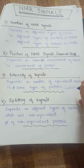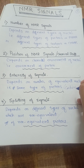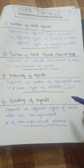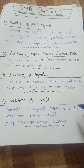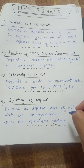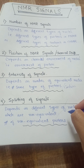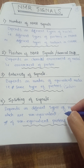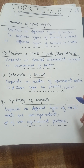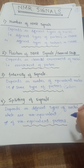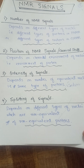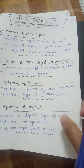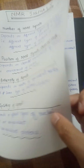The fourth characteristic is the splitting of signals. The splitting of signals depends on different types of nuclei which are non-equivalent. So it can be the non-equivalent protons that split the NMR signal into peaks.